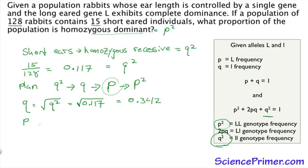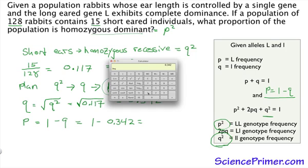We can find p, because p equals 1 minus q. And we get that by rearranging the p plus q equals 1. So 1 minus 0.342 equals 0.658. And so now we have p.